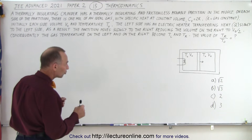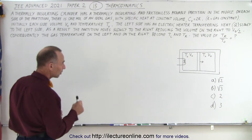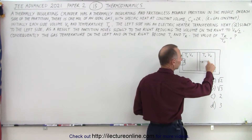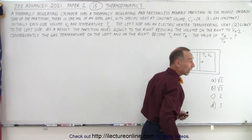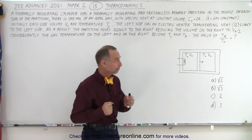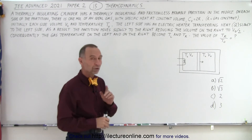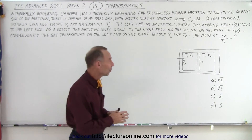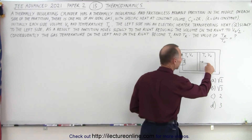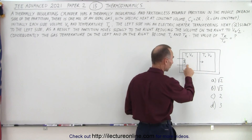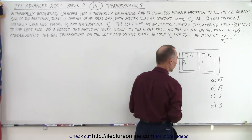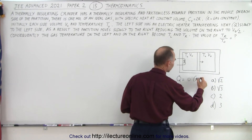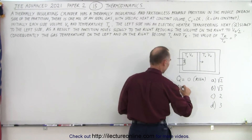Here we're supposed to find the ratio of T_R to T0 — that is, the ratio of the final temperature to the initial temperature on the right side. There are four possible answers and only one is correct. Since the cylinder is well insulated, there is no heat traveling into the partition on the right side — there is on the left, but none on the right. So if Q equals 0 for the right side, we're dealing with an adiabatic process.